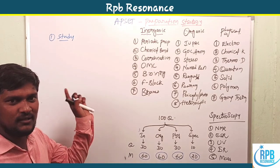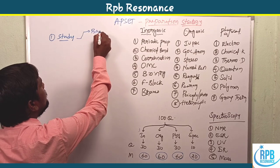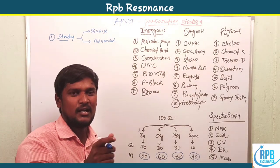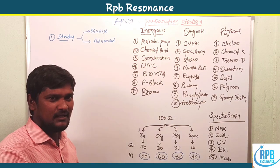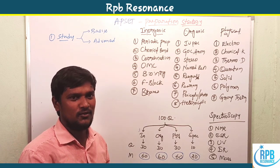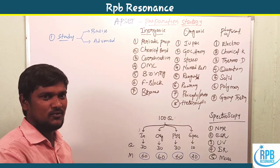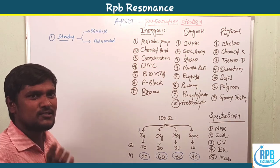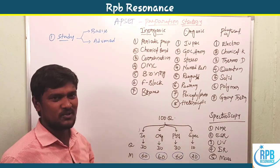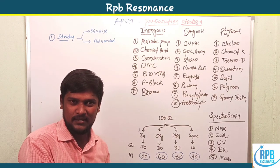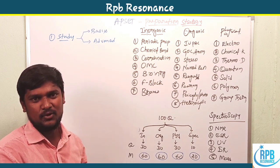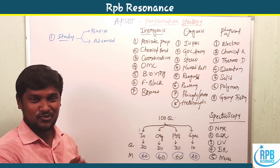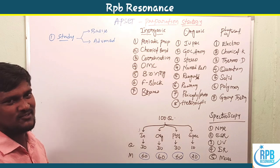For each of the four categories, study in two manners: first, learn the basics of each and every topic, and second, cover the advanced topics. For example, in coordination chemistry, cover basic concepts like ligand classification, valence bond theory, and crystal field theory, and also focus on advanced topics like electronic spectra, reaction mechanisms, and electron transfer reactions.